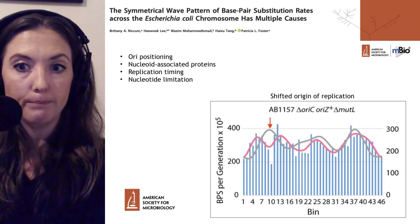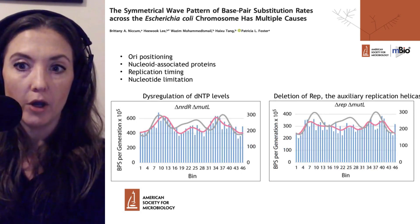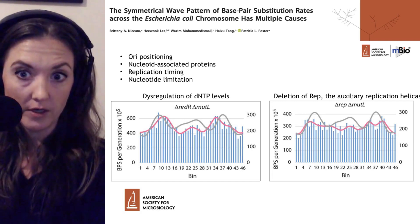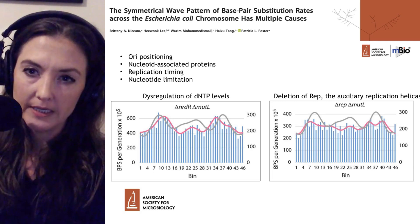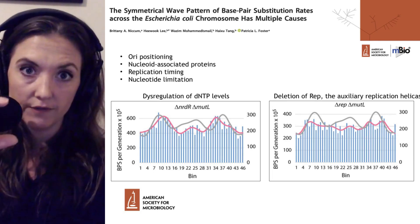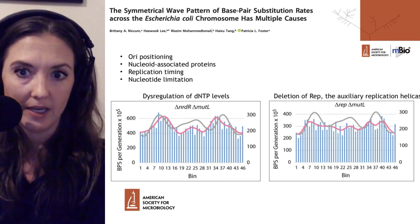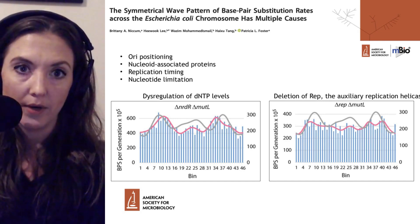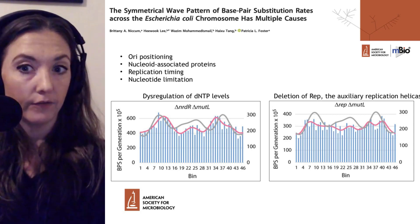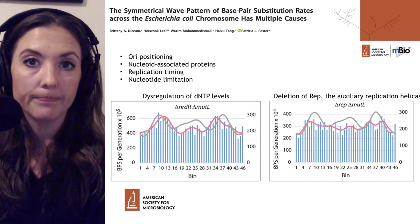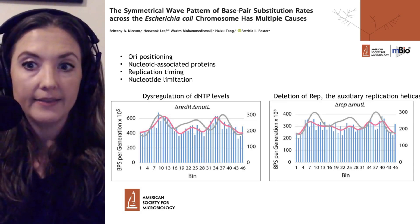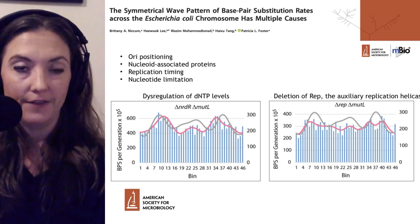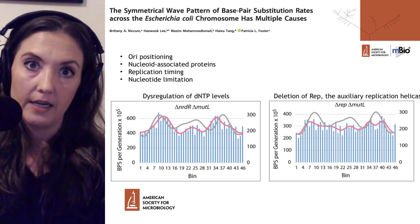On the right-hand side, they looked at a mutant in REP, which is an auxiliary replication helicase. REP is important both for restarting a stalled replication fork and for removing proteins associated with the DNA in front of the fork so replication can continue. This is where they saw the greatest flattening of the pink line — the base pair mutation rate in this mutant. The loss of REP disrupted the base pair substitution rate across the chromosome, suggesting that slowing or stalling the fork results in a more random, even distribution of mutation rate across the genome.